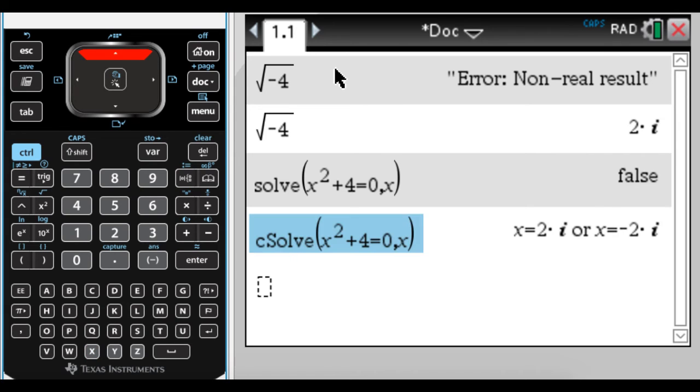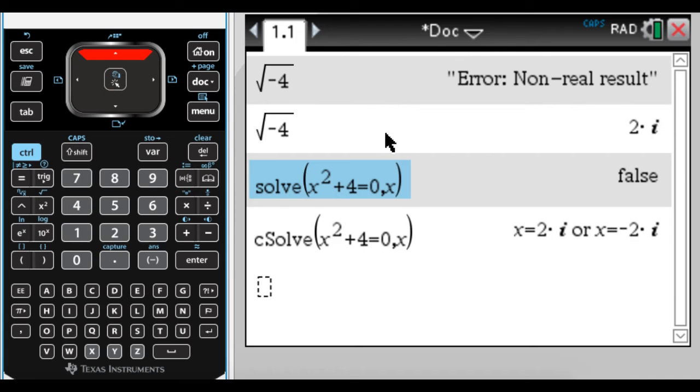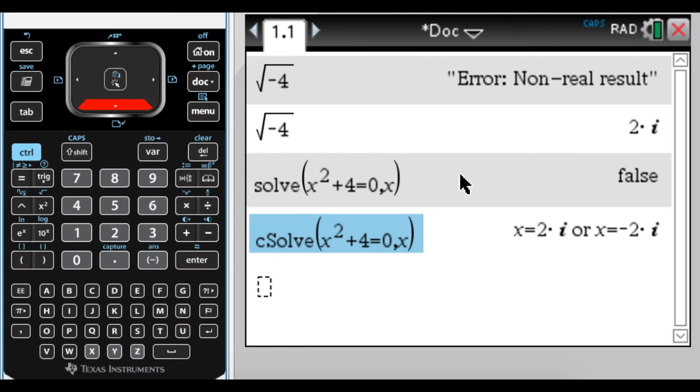So the solve function, this solve function, only wants to solve over the real numbers. So no matter what mode you have your calculator in, it's going to say false if you try to solve that equation. Whereas if you change it into, or not change it, if you select the complex solve, it'll give you these values.